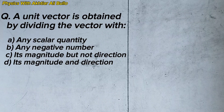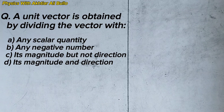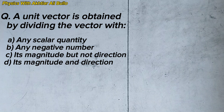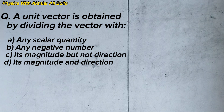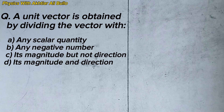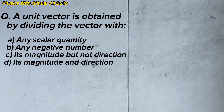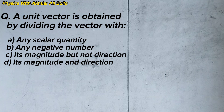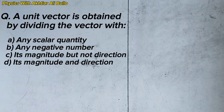The question is: a unit vector is obtained by dividing the vector with — a) any scalar quantity, b) any negative number, c) its magnitude but not direction, d) its magnitude and direction.